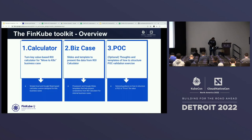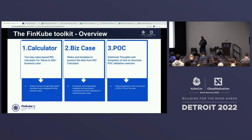A crawl-walk-run approach would be: what if we can just move to the next step and talk in terms of the value you provide instead of the amount you cost? So with that, let me introduce to you the toolkit. You can go to fincube.io and get resources, the GitHub repositories, and everything else today. It consists of three things, which I'll demo for you.